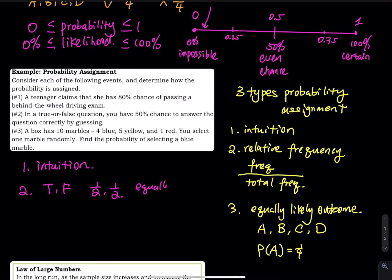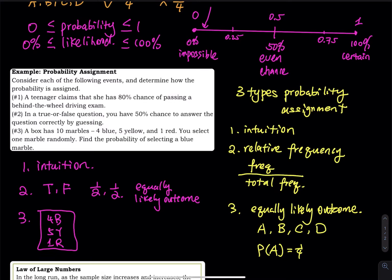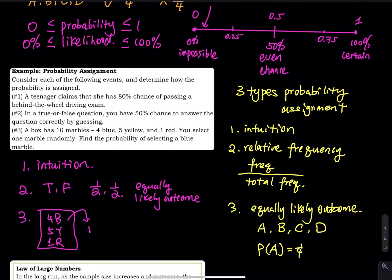Number three — a box has 10 marbles: four blue, five yellow, and one red. You select one marble randomly. Find the probability of selecting a blue marble. The total frequency is 10 because there are 10 balls. The frequency of blue is 4. So this is based on relative frequency. The probability of getting a red marble is 1 over 10. The probability of getting a yellow marble is 5 over 10. You take the frequency of that color divided by the total frequency.